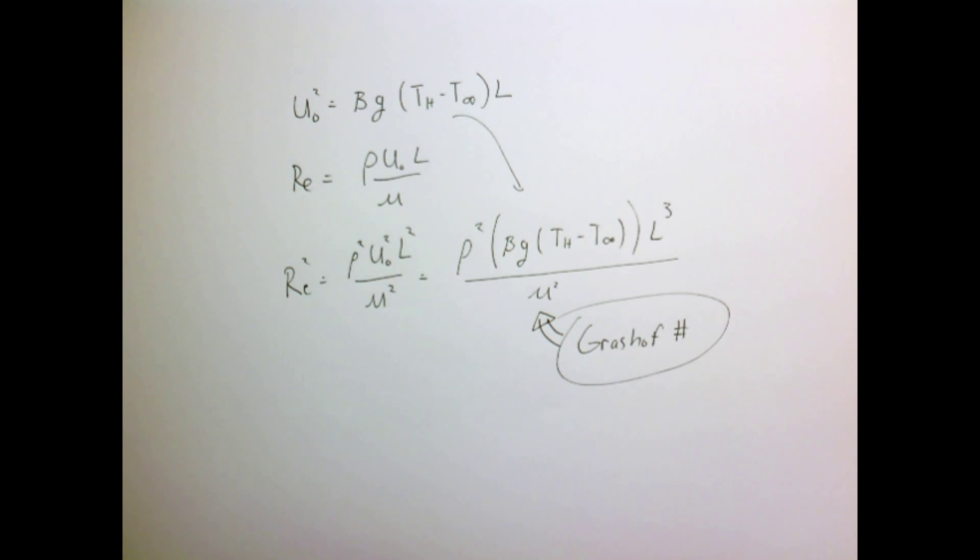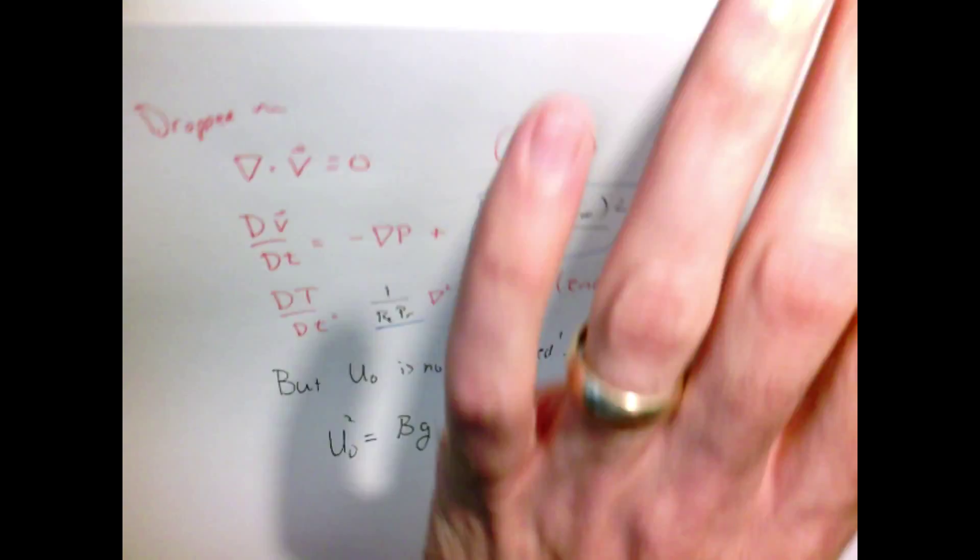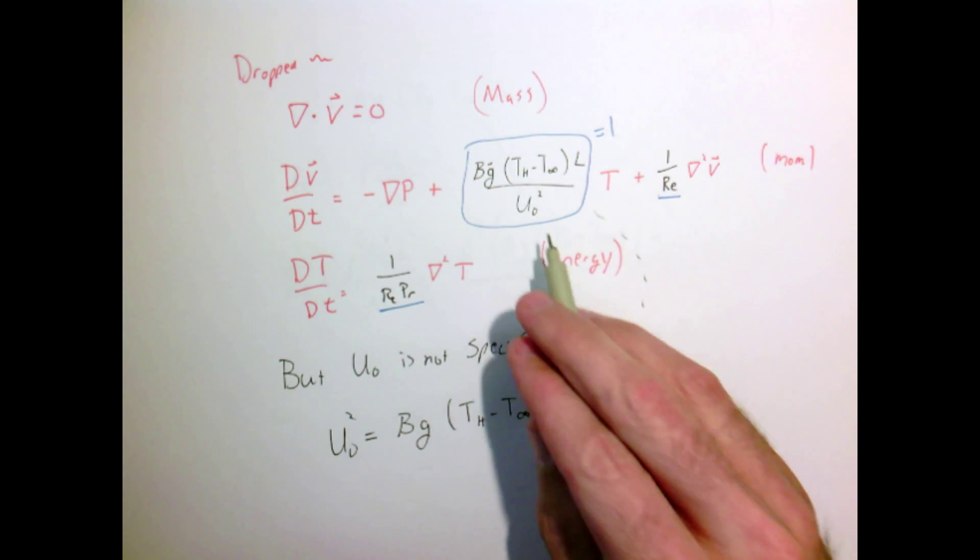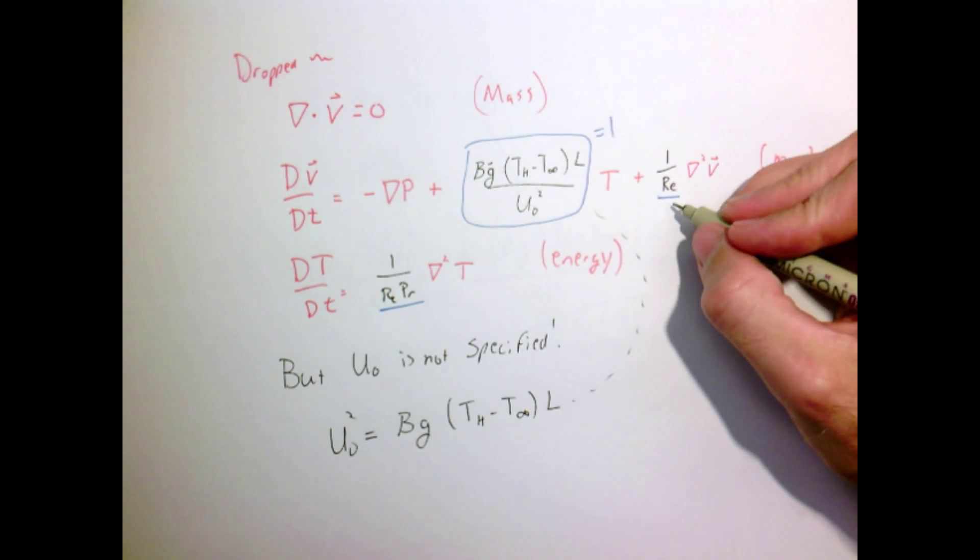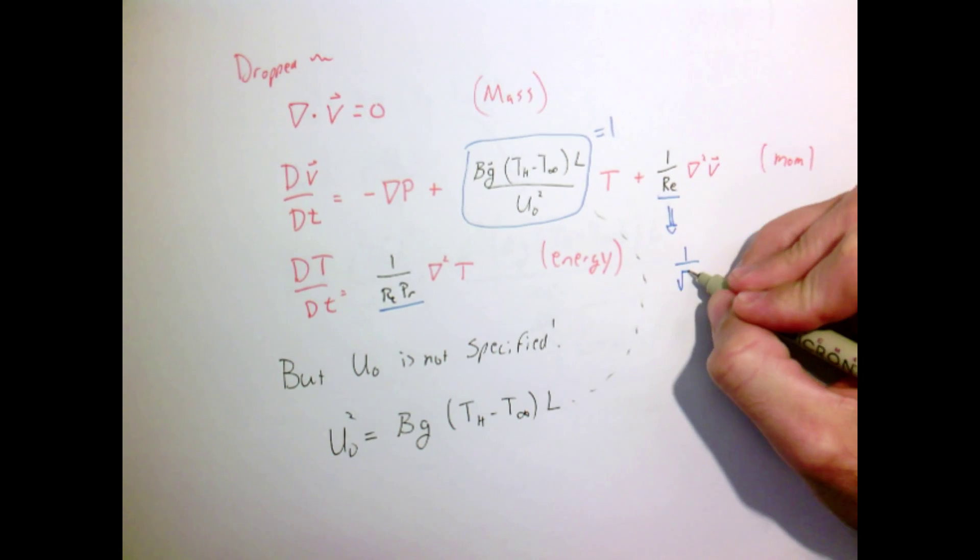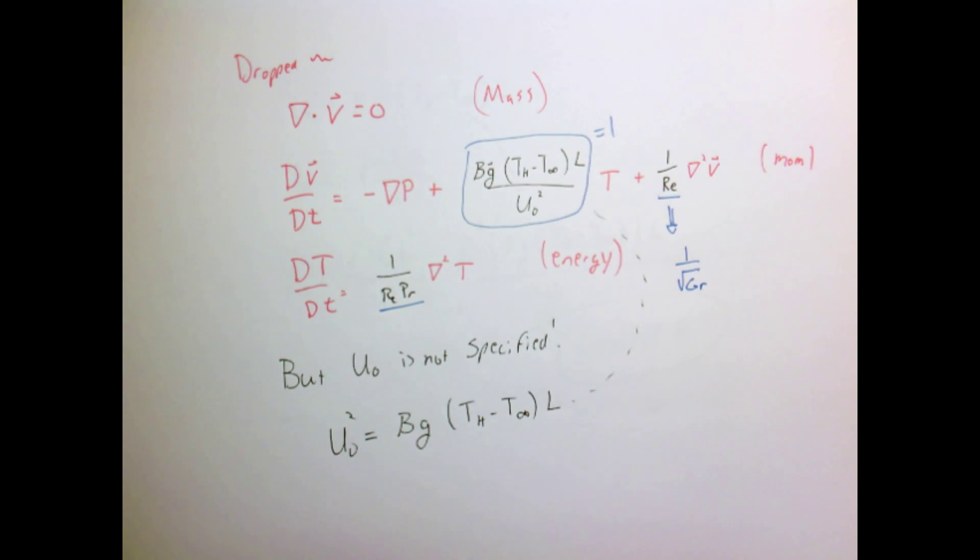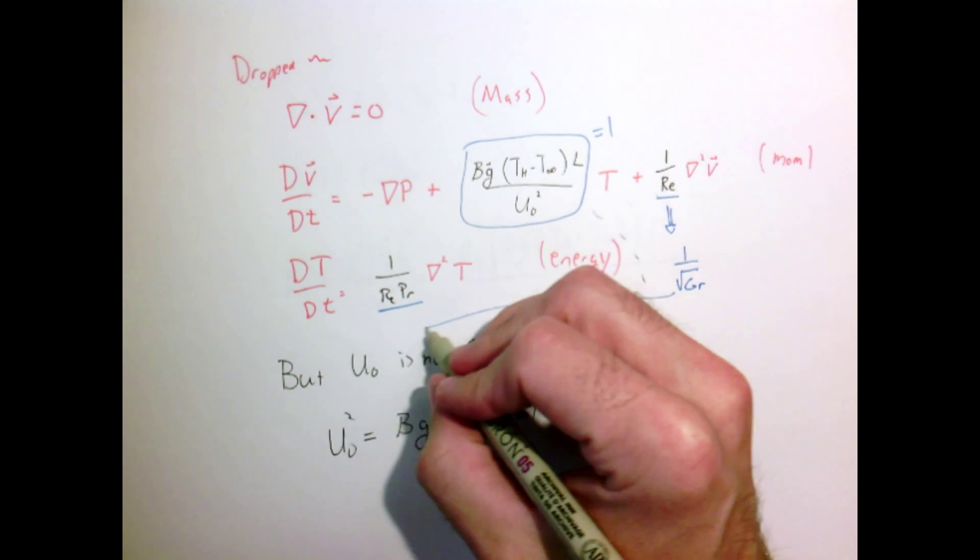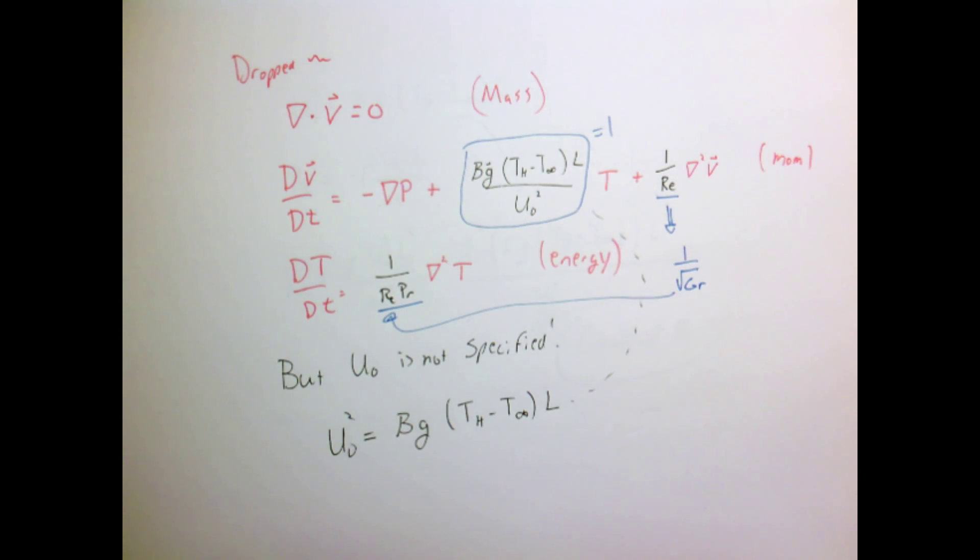This dimensionless number is known as the Grashof number. If we go back and look at our conservation of momentum, if we use this definition of u₀², then our Reynolds number here becomes one divided by the square root of the Grashof number. That number also shows up in there. Pretty cool—we pick up a new dimensionless number.